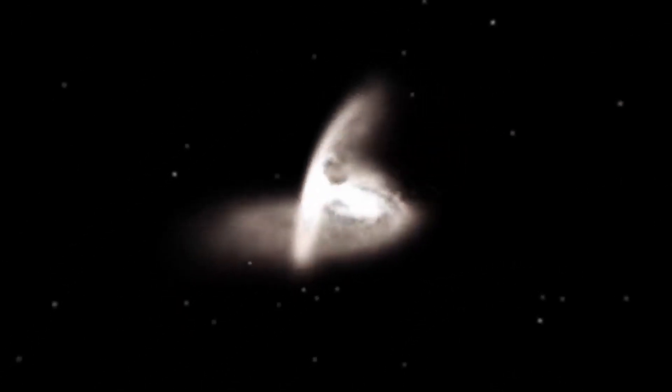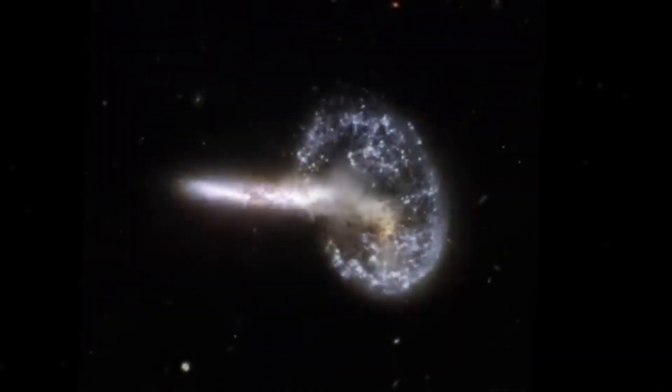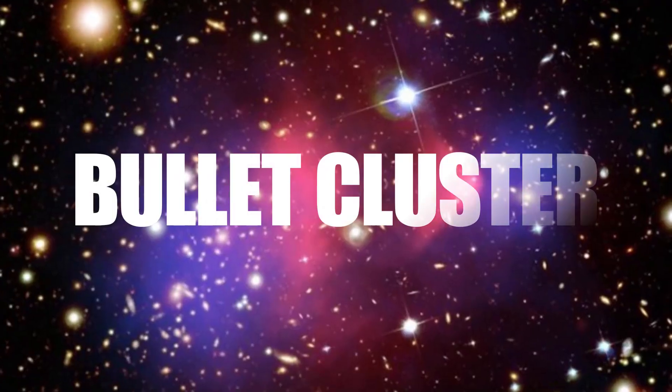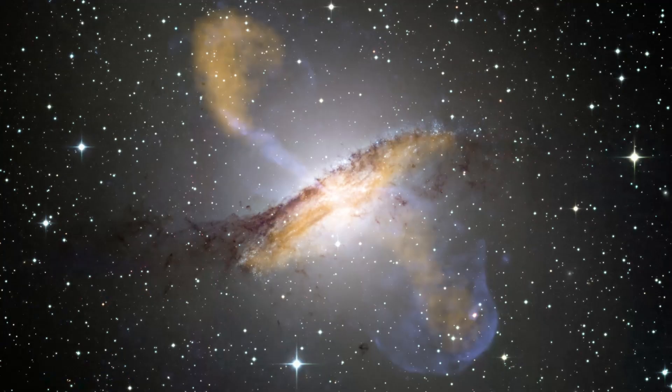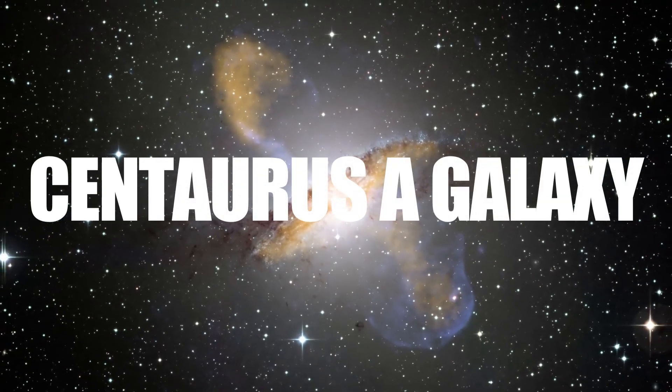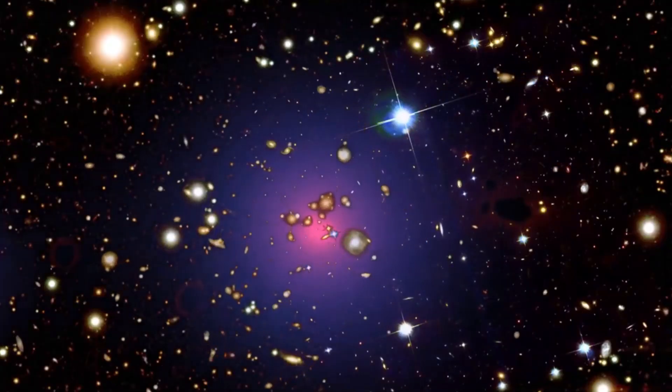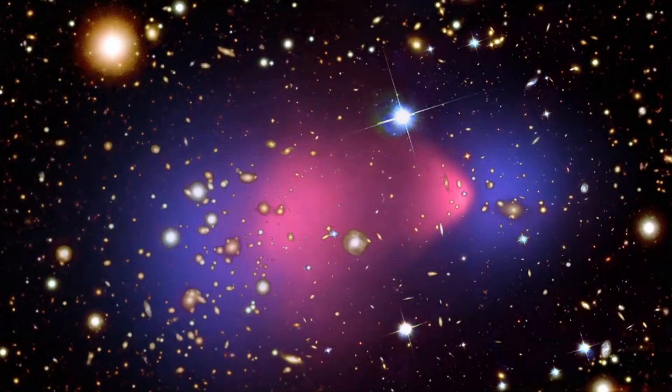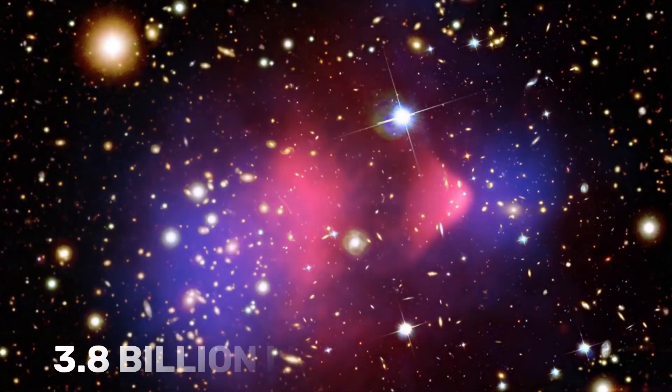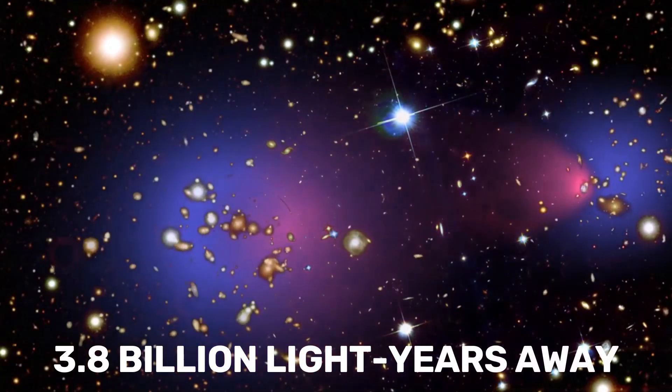Some examples of galaxy collisions and mergers that have been observed in the direction of the Great Attractor are the Bullet Cluster, the Abel 3627 Cluster, and the Centaurus A Galaxy. One of the most striking examples of galaxy collisions is the Bullet Cluster, a pair of colliding galaxy clusters about 3.8 billion light years away from us.